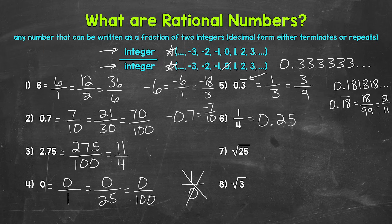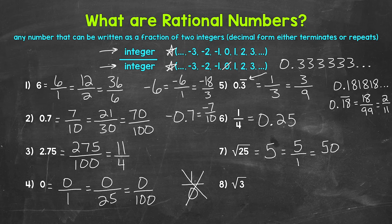Let's move on to number seven, where we have the square root of 25. The square root of 25 equals 5. So is 5 rational? Yes — 5 is a whole number and we can write it as a fraction of two integers: 5 over 1, 50 over 10, and so on. So the square root of 25 is rational.